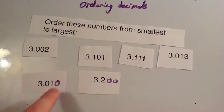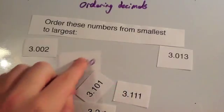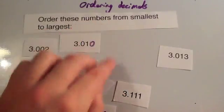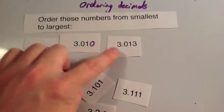The next smallest would then be this one, 3.010. It would be the next smallest. The next smallest would be 3.013.